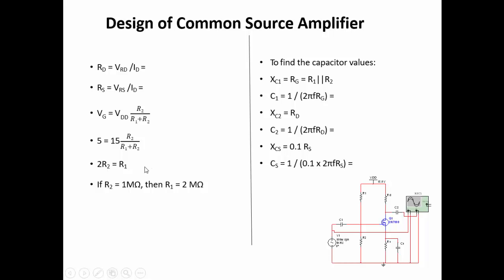We assume values for R1 and R2. Since the MOSFET has high input impedance, resistor values can be in the megaohm range. We approximate R2 equal to 1 megaohm, so accordingly R1 equals 2 megaohms. To find capacitor values, we use the reactance formula: XC1 equals Rg, where Rg is the gate resistance equal to R1 parallel R2. C1 is found as 1 divided by (2π × f × Rg).